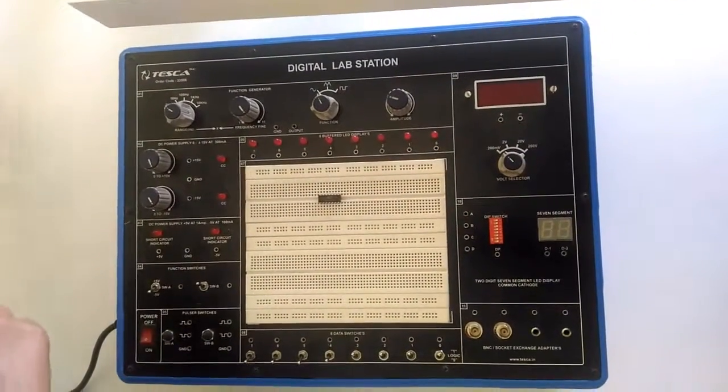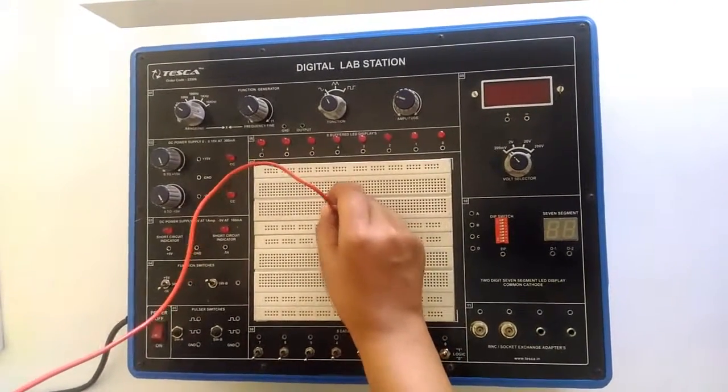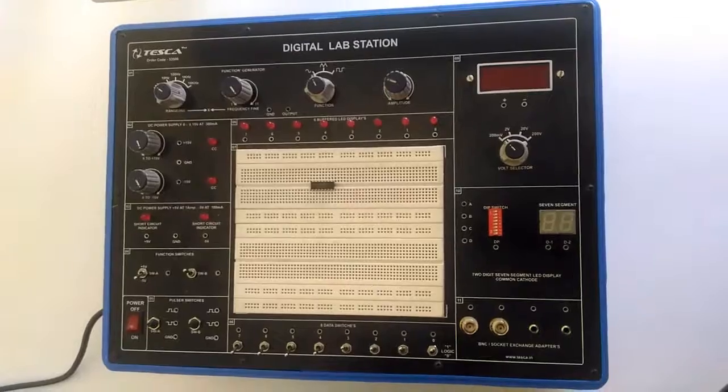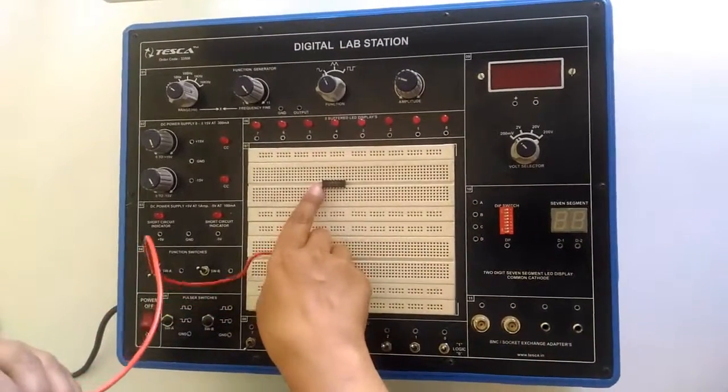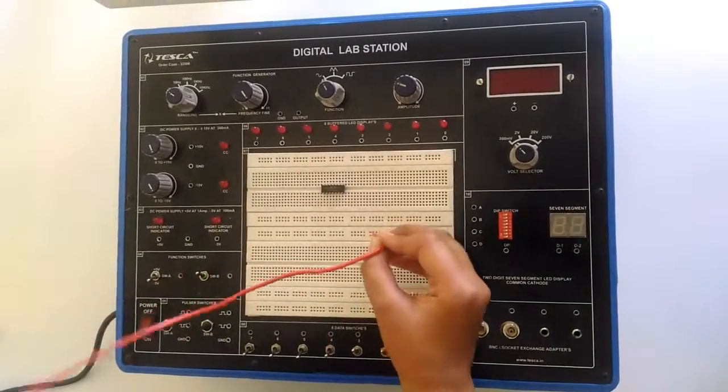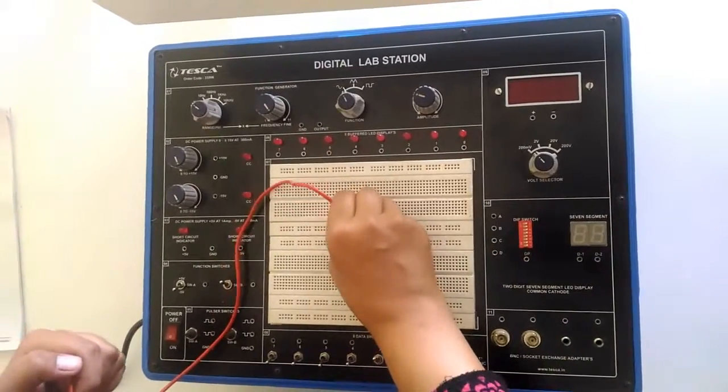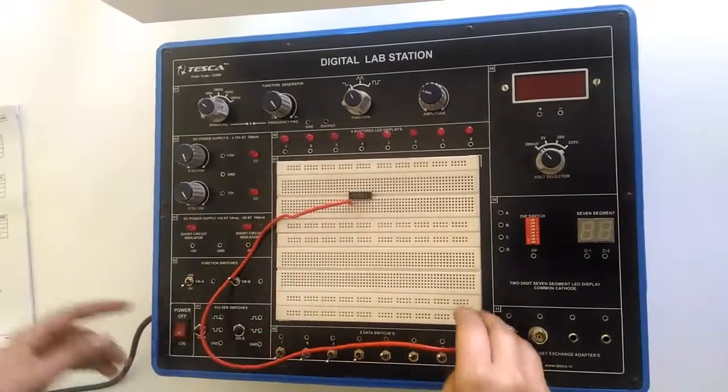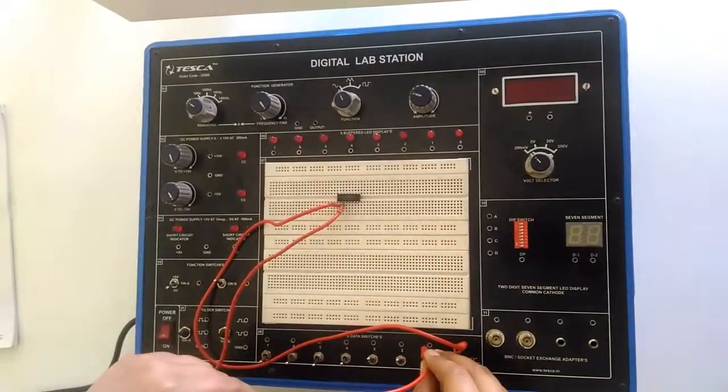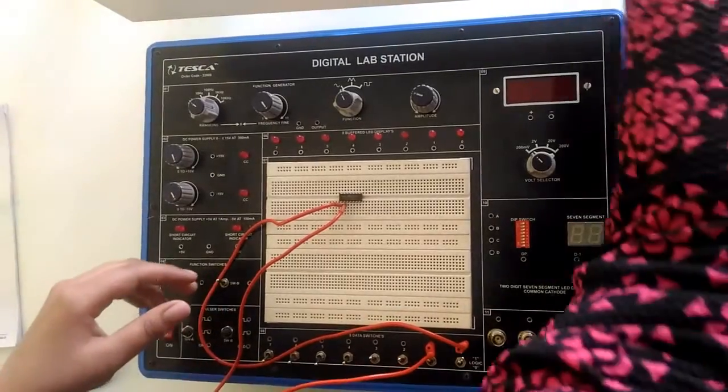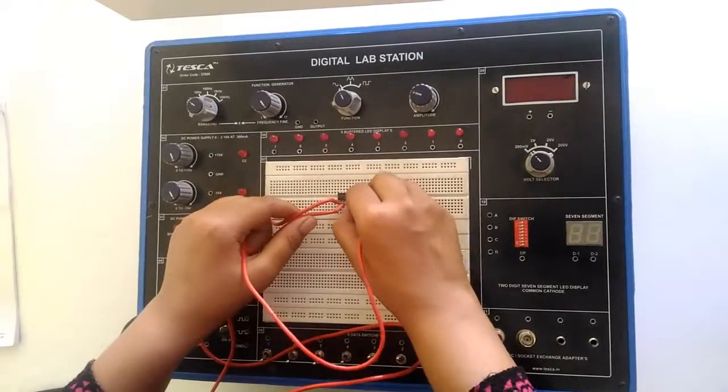Now, I am taking input from its first pin. Always remember that from the left side of this cut, we will start the counting of the pin. So, this is the first pin and I am inserting it in the first input. For the second input, I am inserting it in the second pin and for the output, I am inserting it in the third pin.